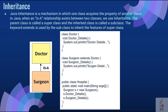Java inheritance is a mechanism in which one class acquires the property of another class. In Java, when an 'is-a' relationship exists between two classes, we use inheritance. The parent class is called a superclass and the inherited class is called a subclass. The keyword 'extends' is used by the subclass to inherit the features of the superclass. In this example, the surgeon is the subclass and the doctor is the superclass. Inheritance is very important because it leads to the reusability of code.